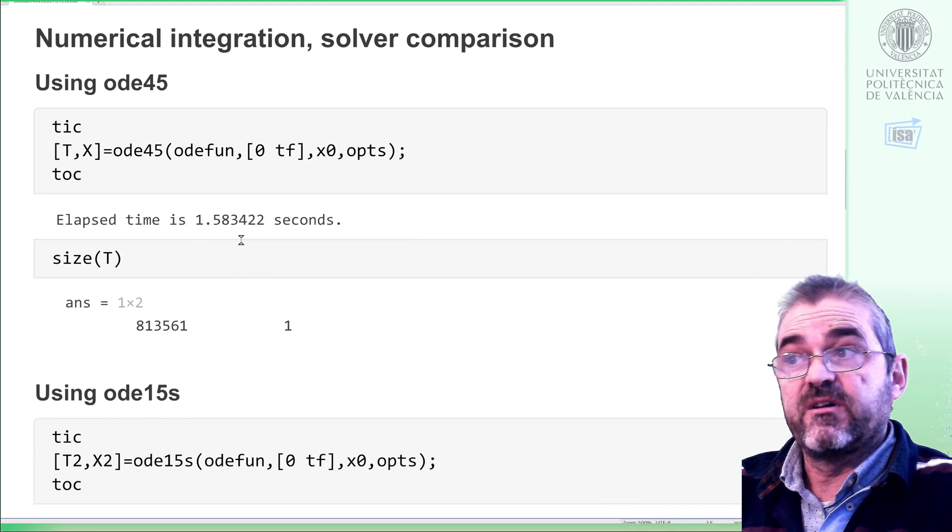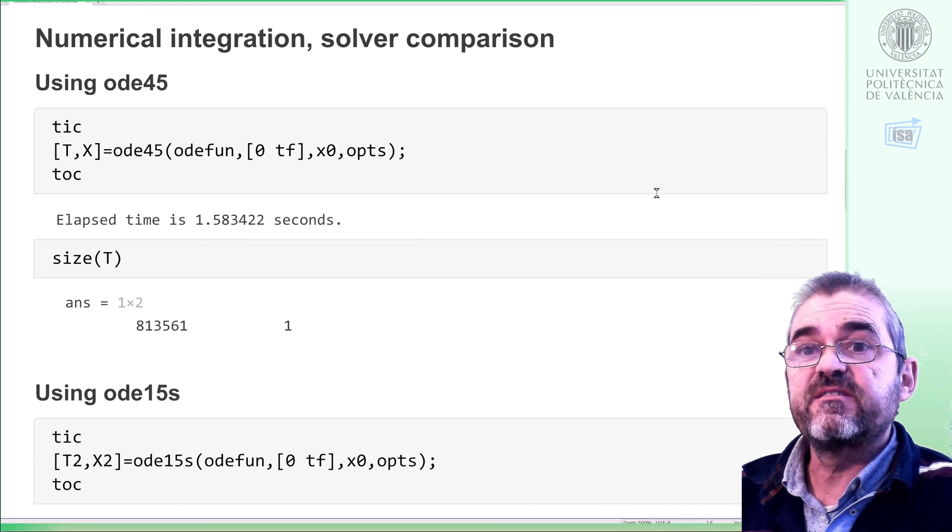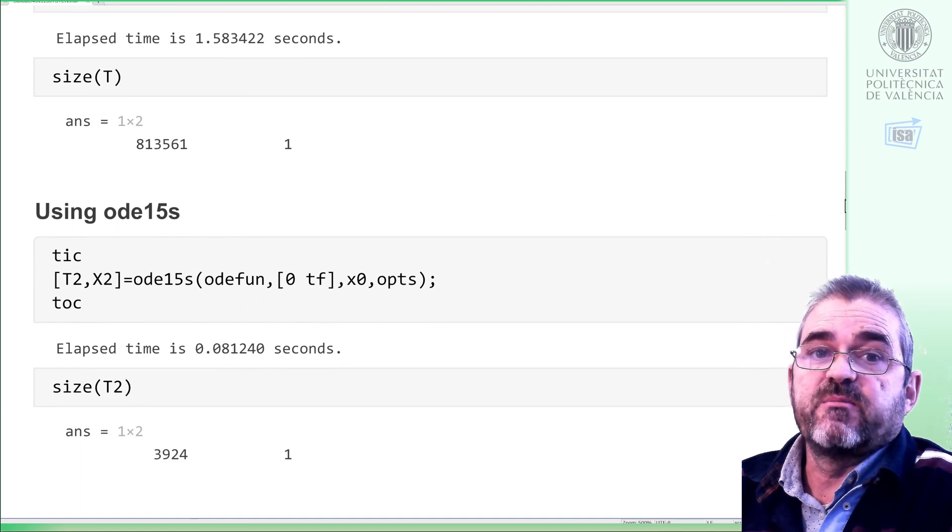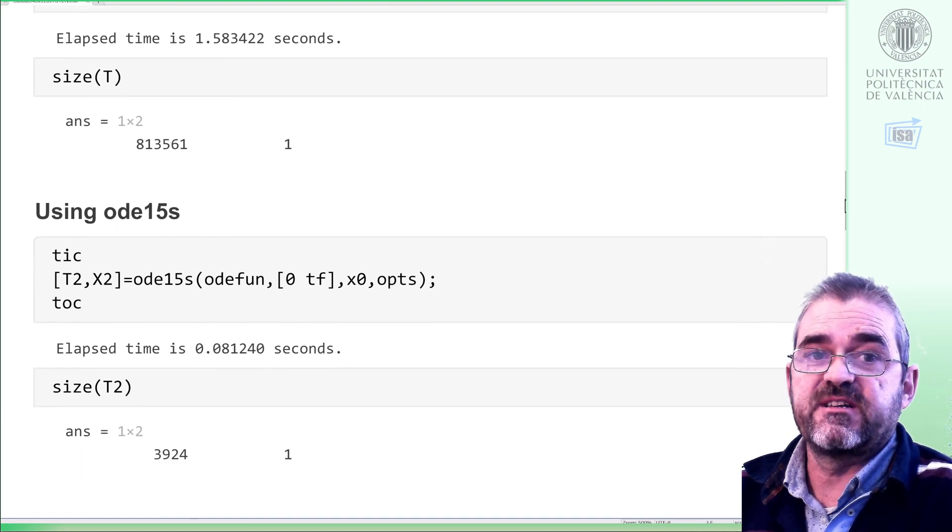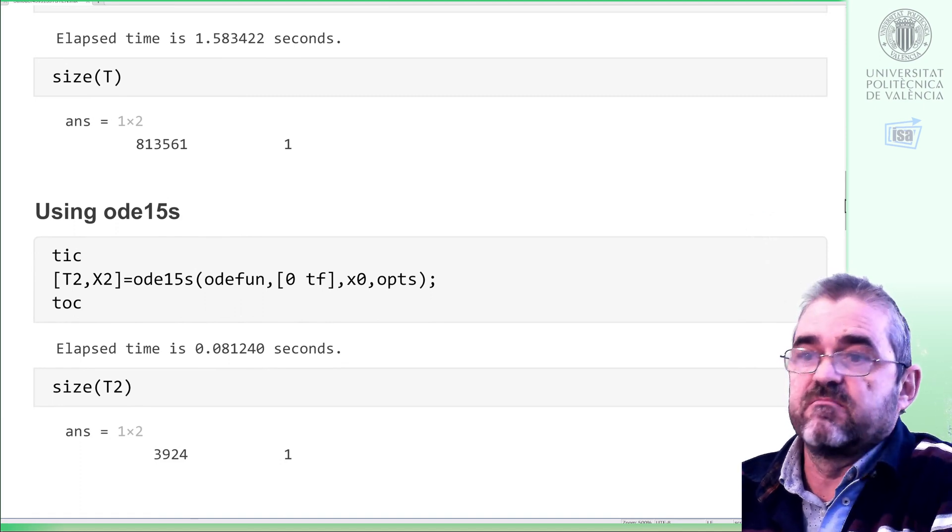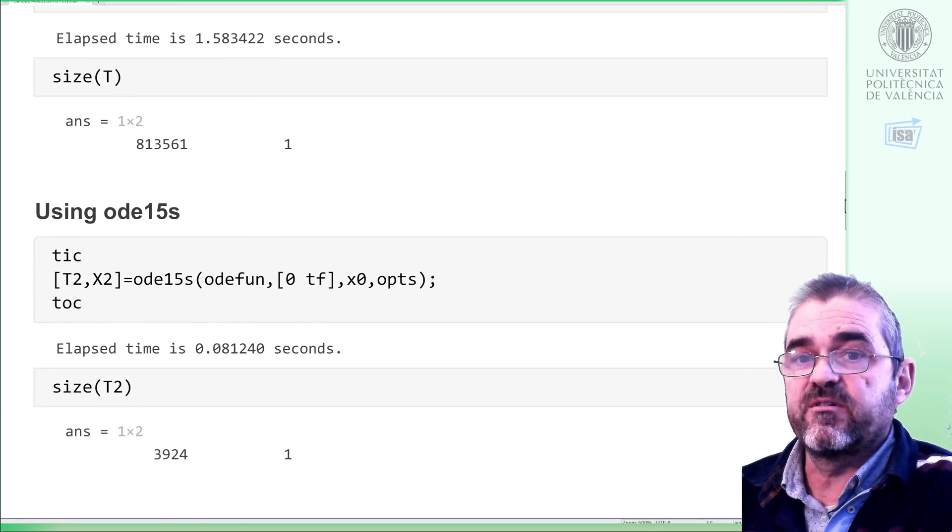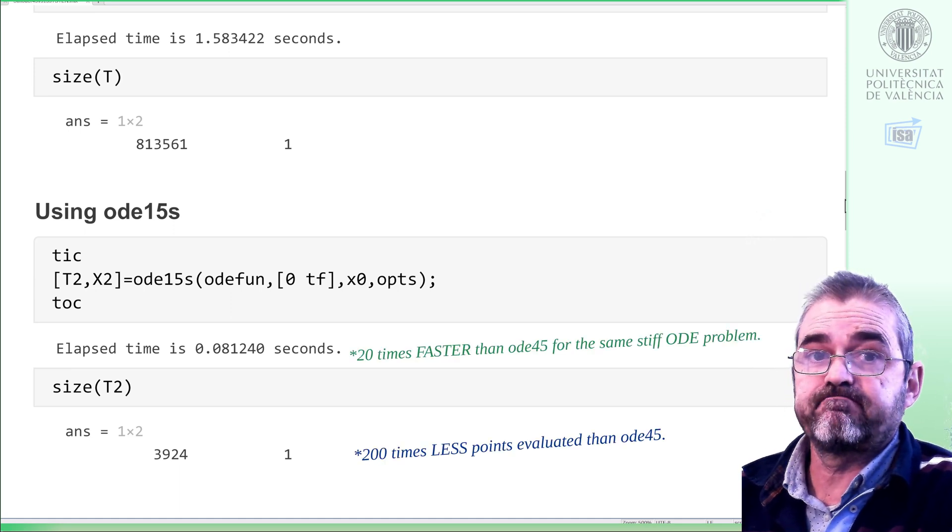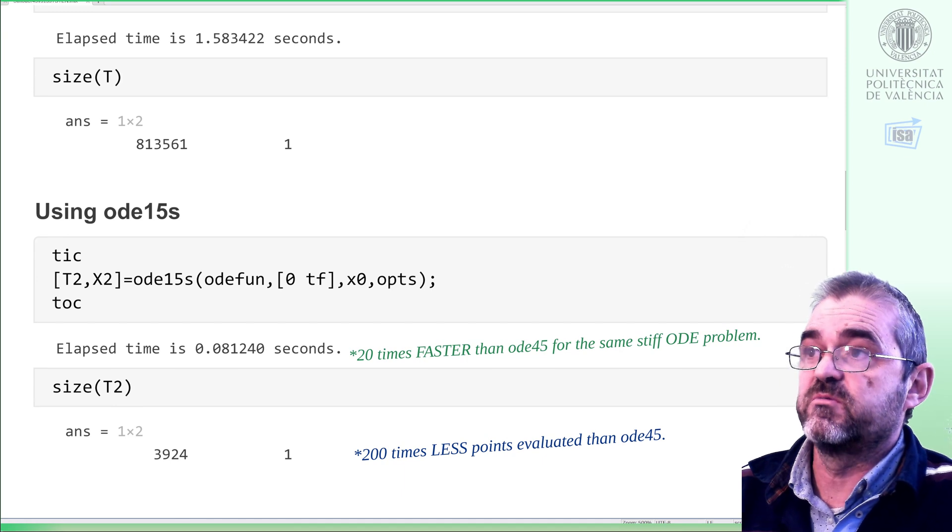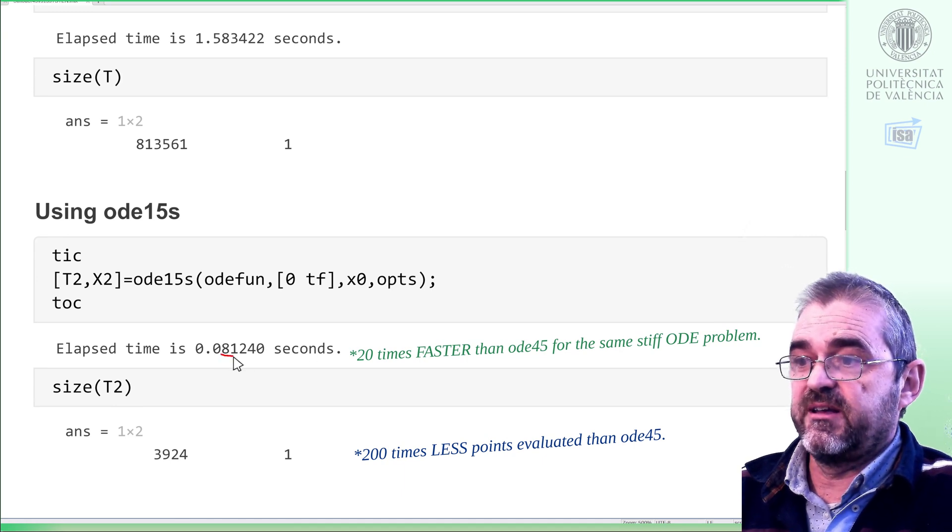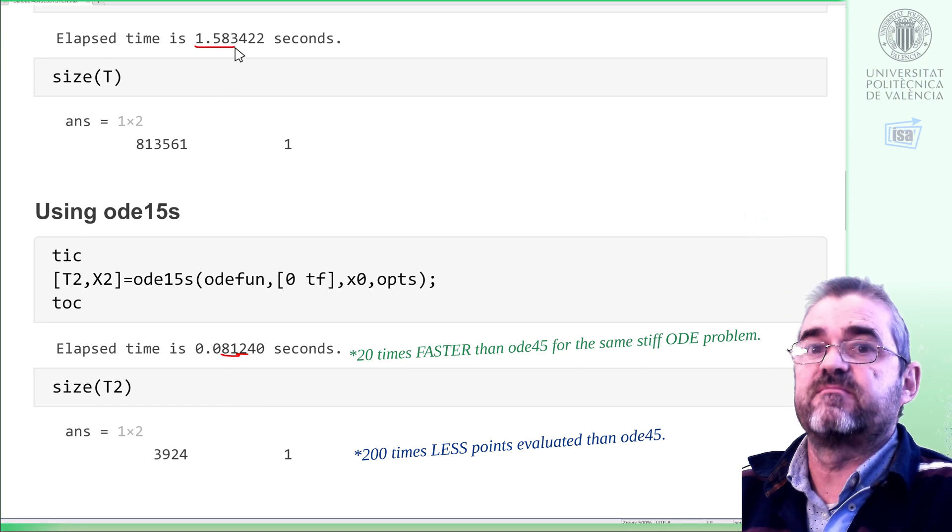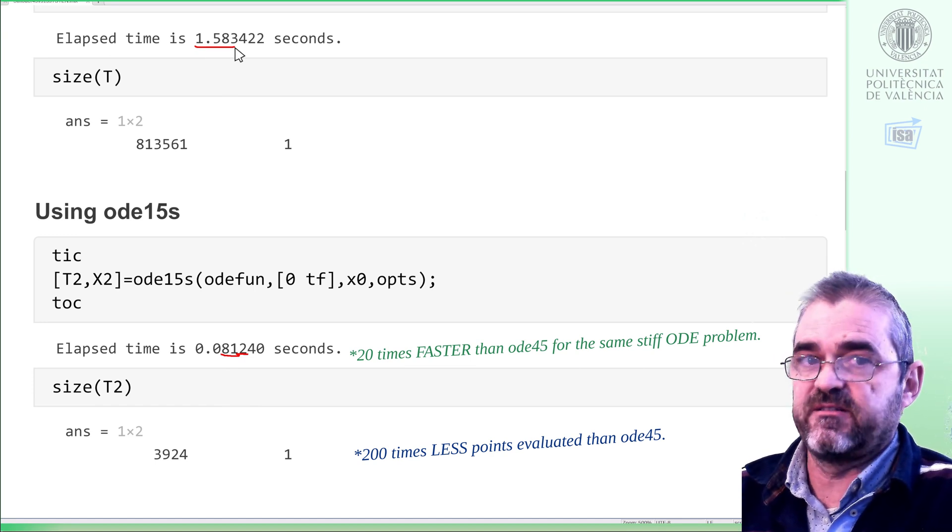However, the ODE solver for stiff systems, bingo. So it took basically the same amount of time than in the previous case. I mean, depending on your computer and on random load of the computer, it takes more or less. But in this case, it took 81 milliseconds and 4000 points. So if we compare 81 milliseconds with 1600 milliseconds, it's kind of a dismal difference.